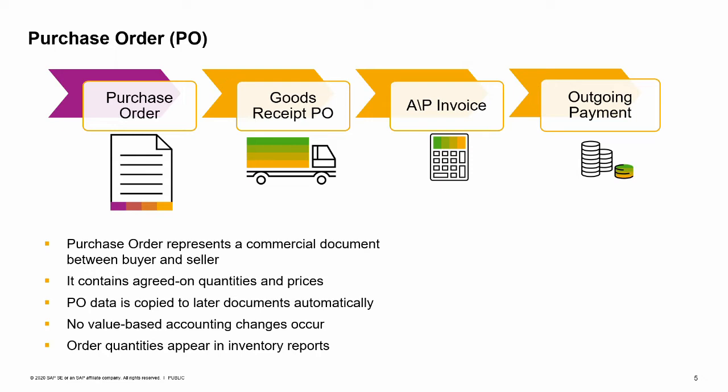In SAP Business One, this process is automated. The purchase order can be linked to the goods receipt PO, which shows information from the packing slip, which then can be linked to the AP invoice, which contains the information from the vendor's invoice. This automation allows information to be consistent and retained throughout the process. You never have to enter data twice.